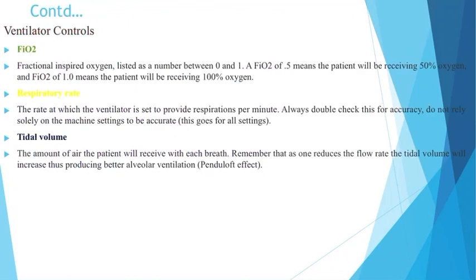Now let's see the ventilator controls. The first one is FiO2, which stands for fractional inspired oxygen. It is listed as numbers between 0 and 1. A FiO2 of 0.5 means the patient will be receiving 50% oxygen, and a FiO2 of 1 means the patient will be receiving 100% oxygen. The next control is respiratory rate — the rate at which the ventilator is set to provide respirations per minute. Always double-check this for accuracy and do not rely solely on the machine settings. The next control is tidal volume — the amount of air the patient will receive with each breath.